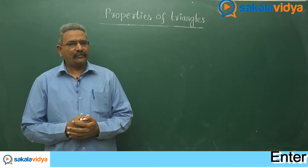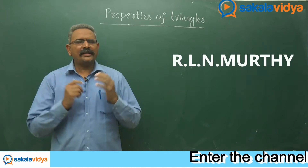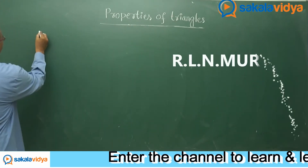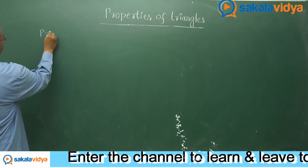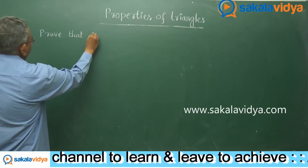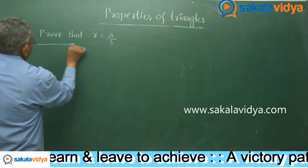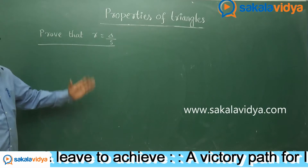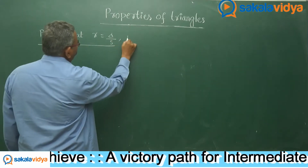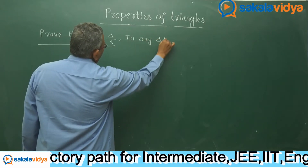Let us formulate small r, that is the inradius. In any triangle ABC, we need to prove that small r is equal to delta by s. So, how do we formulate small r equals delta by s in any triangle ABC?